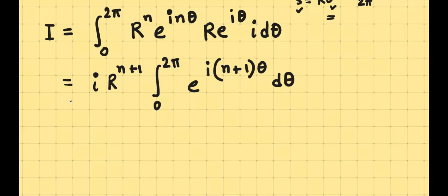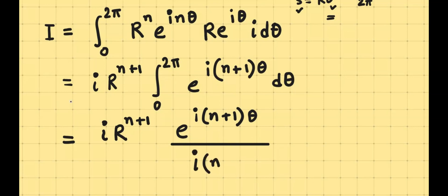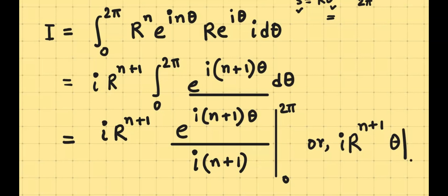Now this is a simple integration of the exponential function, and we know what it turns out to be. It turns out that i times R to the power n plus 1. And then from the integral, we find e to the power i (n plus 1) theta over i times (n plus 1). This is especially valid when n is not equal to negative 1, and when in fact n is equal to negative 1, it turns out that this integral here is just 1, because e to the power 0 is 1. So in that case, we have i times R to the power n plus 1, and then all the integration of d theta, which gives us theta, with limits from 0 to 2π.